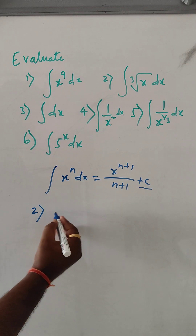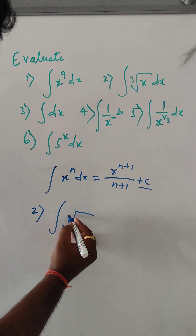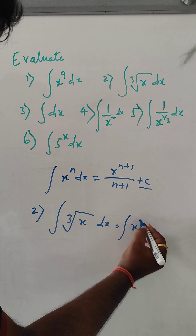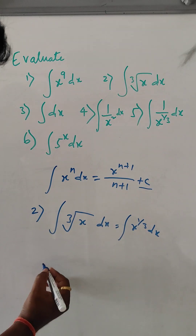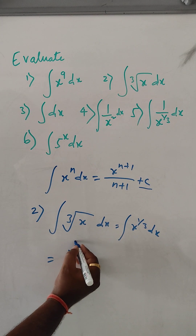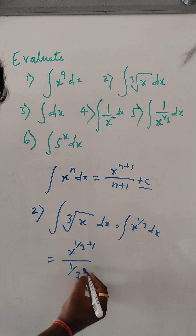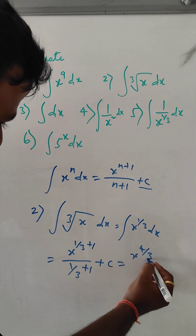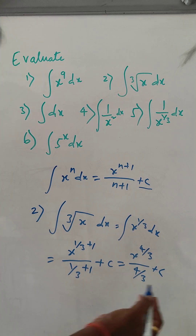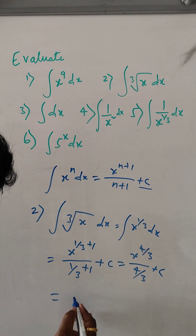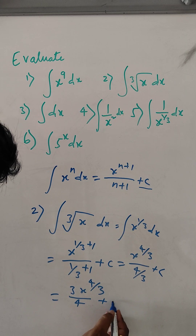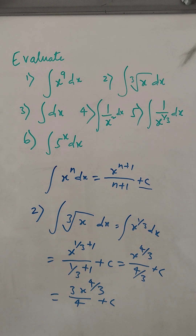Second one. What is second one? Integral of cube root of x dx. This can be written as integral of x to the power 1 by 3 dx. That gives x to the power 1 by 3 plus 1, divided by 1 by 3 plus 1, plus c. So it is x to the power 4 by 3, divided by 4 by 3, plus c — which is 3x to the power 4 by 3 by 4 plus c.